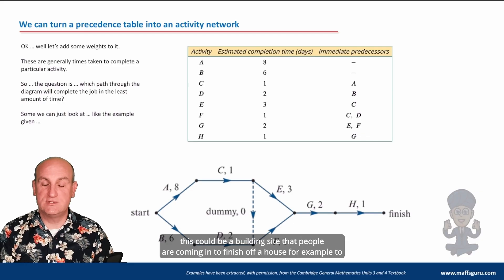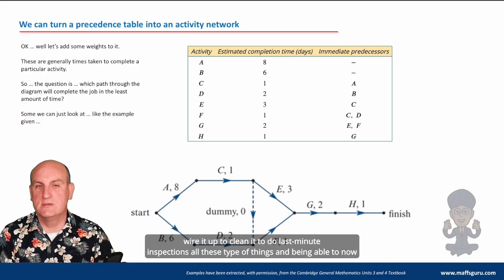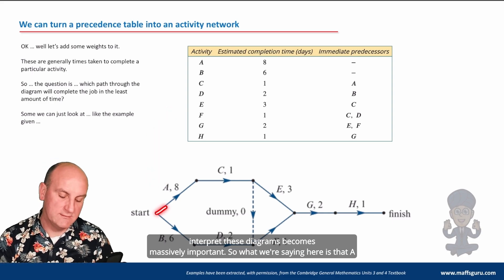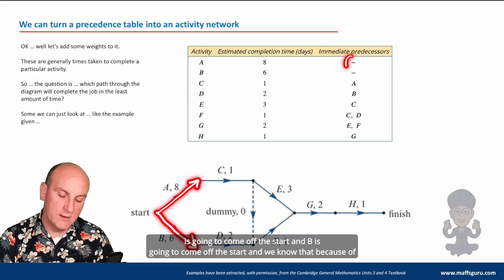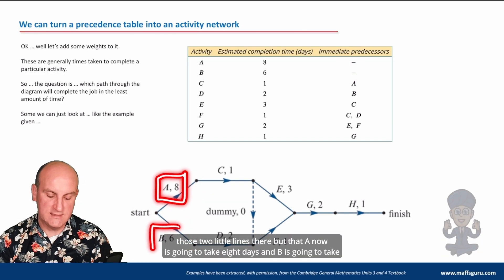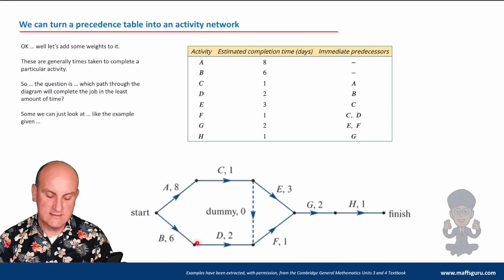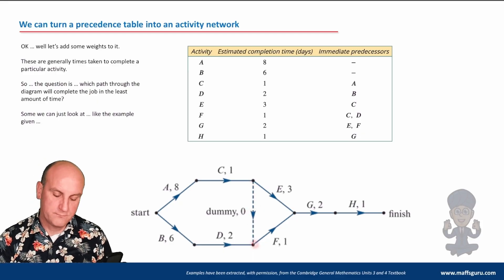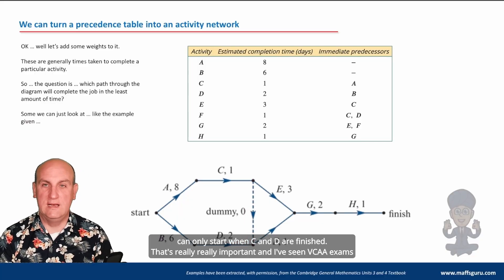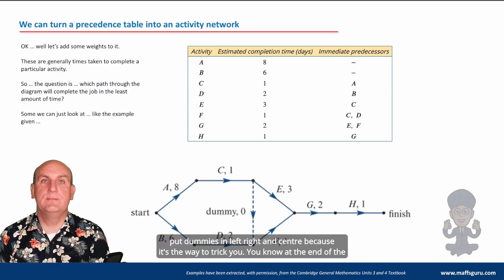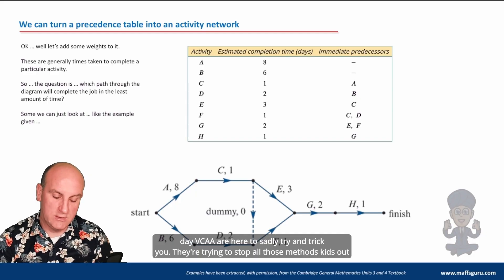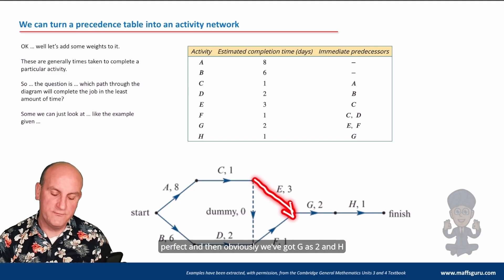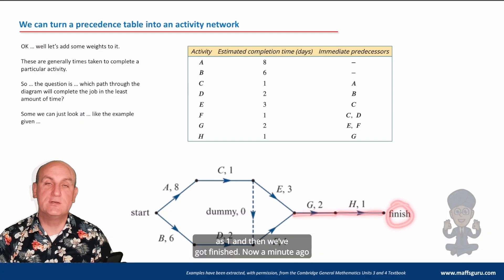Activity D can only start when activity B is finished, and D is going to last two days. This could be a building site — wiring, cleaning, last-minute inspections. A comes off the start taking eight days, B comes off the start taking six days, C takes one day, D takes two days. The dummy tells us that F can only start when both C and D are finished — that's really important. Then G takes two and H takes one, and then we've got finished.